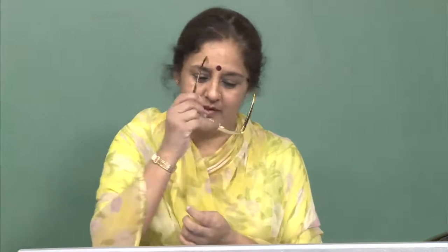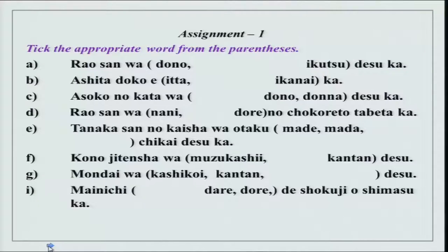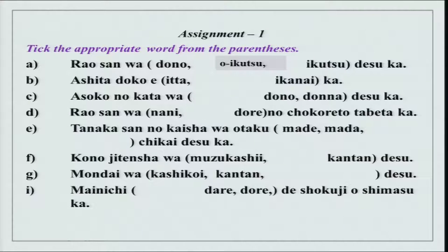But before that, as always, we will go over the assignments. The first assignment was to take the appropriate word from the brackets. The first one is oikutsu — Rao-san wa oikutsu desu ka? Ikutsu means number, and oikutsu is the polite form for age. So, Rao-san wa oikutsu desu ka means 'Rao-san, how old are you?'